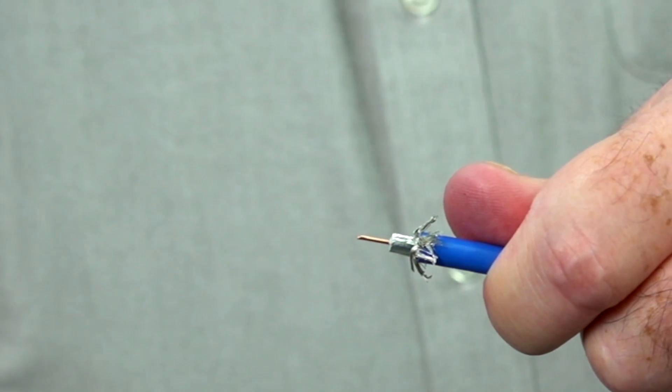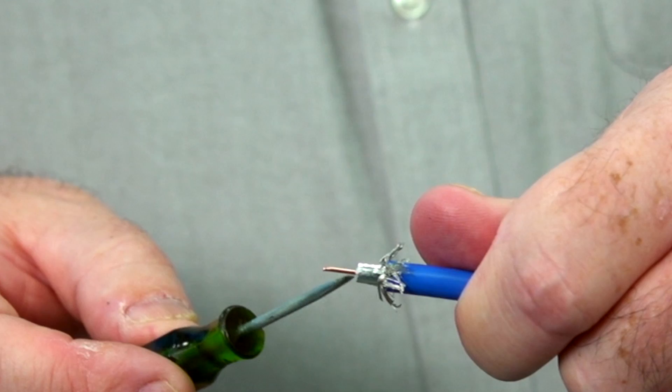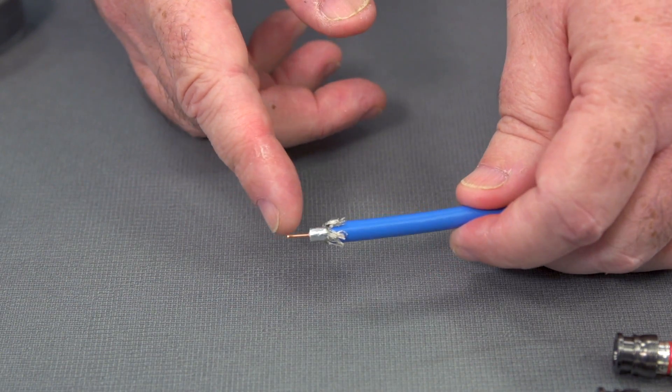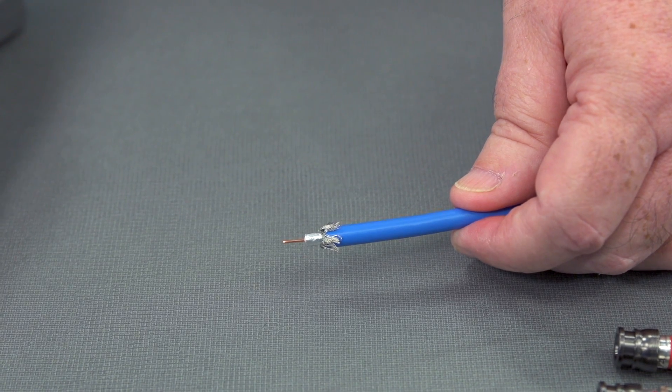And again, we want to make sure that there's no shield conductor wrapped around the center conductor. Okay, now we've got our cable stripped. Our shield is folded back properly. Now let's fit on the connector.